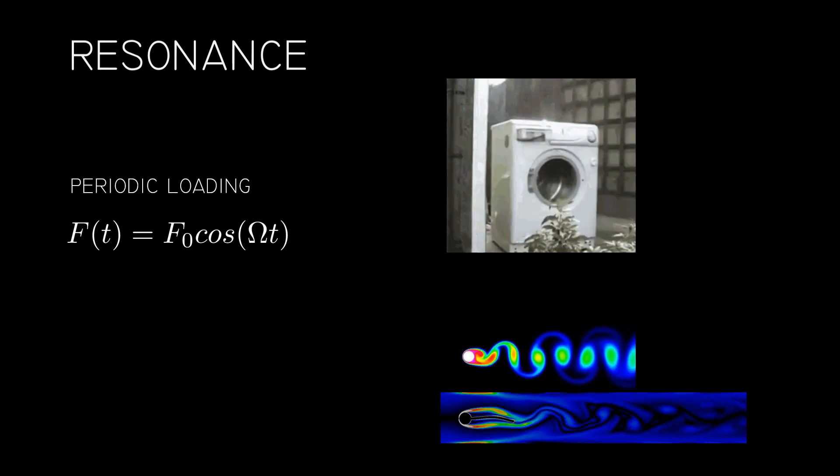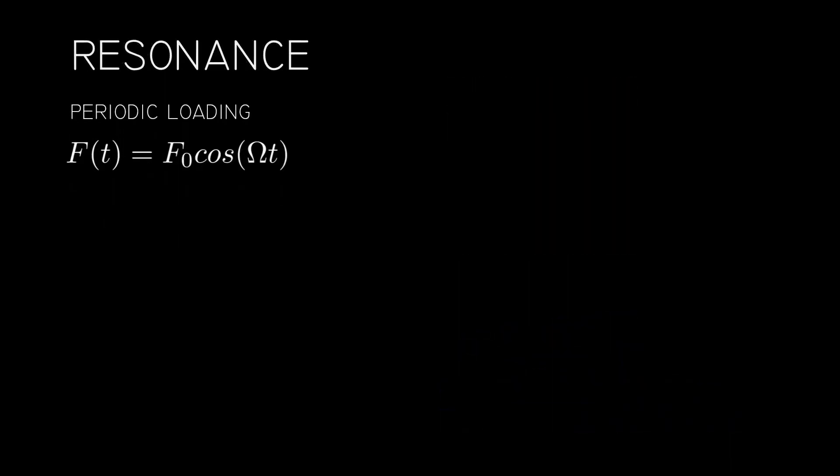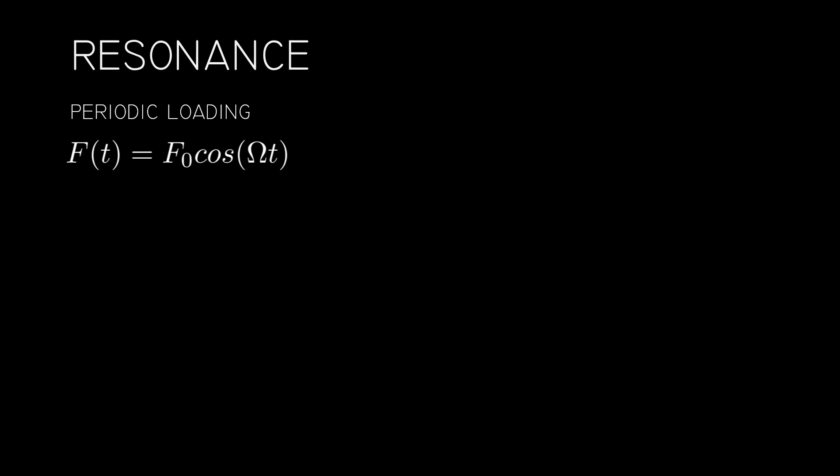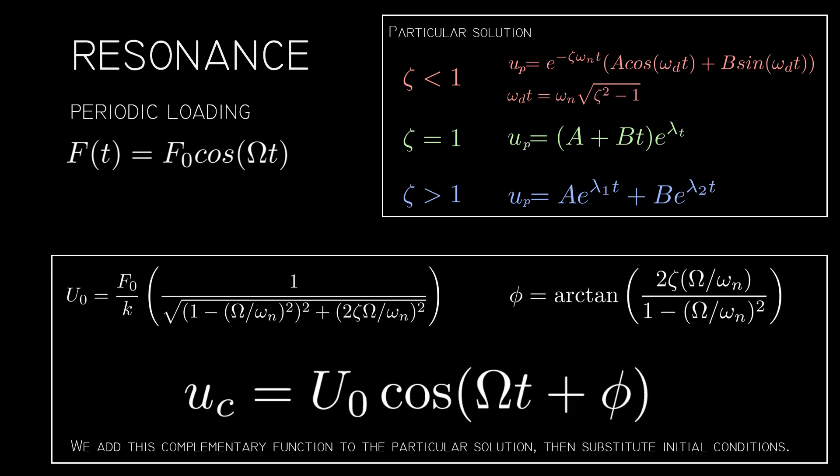The equation of motion now becomes an inhomogeneous differential equation because the external force is not zero. Now u(t) has both a particular solution, which is the solution to the enforced case, and the complementary function. The complementary function for this type of periodic loading looks like this. If you want to prove it for yourself, go ahead, but contrary to popular belief, this is not a math channel, so I will not go into any more detail about it.